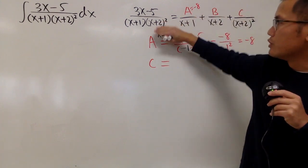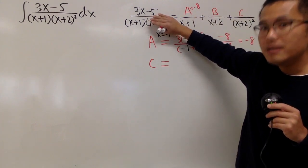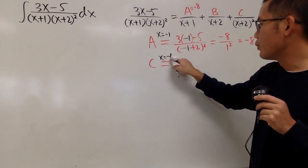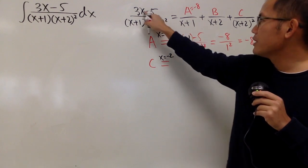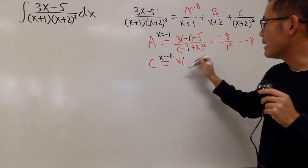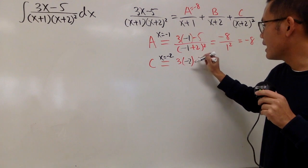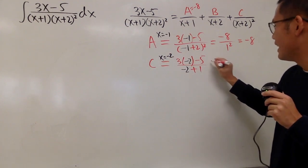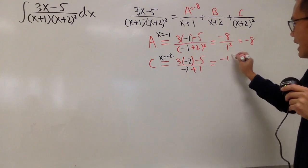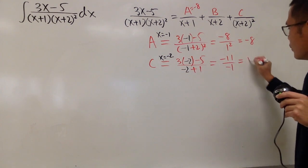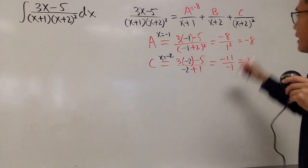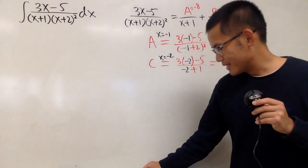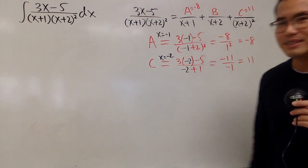Now let's do the same for C. Go back to the original, cover the same denominator x plus 2 squared — x has to be negative 2. So let x equal negative 2 and plug it in. We get 3 times negative 2 minus 5 over negative 2 plus 1, which gives negative 11 over negative 1, so C equals positive 11. We've knocked off two values using the cover-up method.